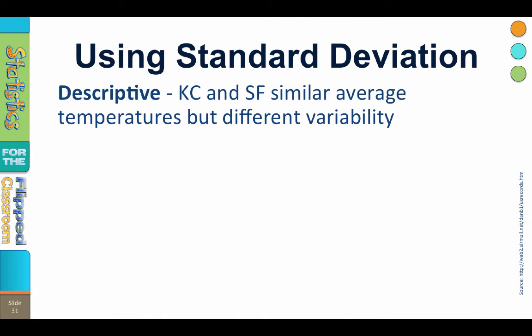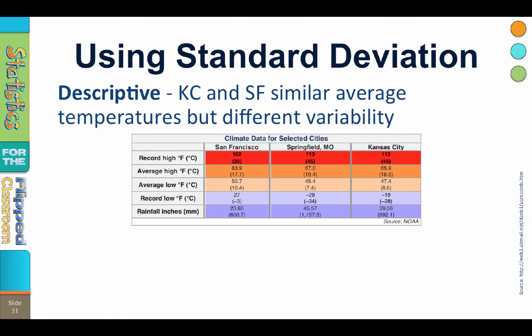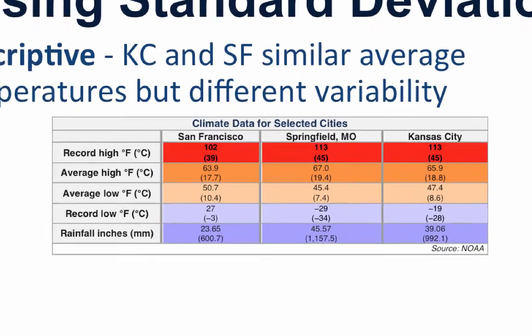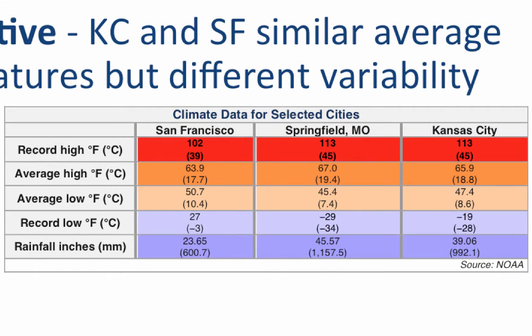The standard deviation gives us additional information that is not provided by the mean. Without this additional information, the mean could create a misleading conclusion. For example, the average high temperature in San Francisco is 63.9 degrees, very similar to the average temperature in Kansas City, Missouri of 65.9. The average low is 50.7 in San Francisco and 47.4 in Kansas City. So San Francisco and Kansas City must have very similar climates, right? Not at all.